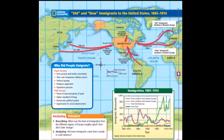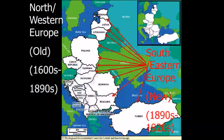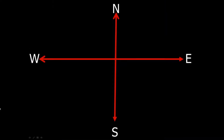Here's a quick map showing the time frame and different push and pull factors — pause and write them down for your notes. Old immigrants from North and Western Europe came from the 1600s all the way to the 1890s. The new immigrants came from Romania, Lithuania, Poland — these Eastern Bloc countries. Northwest on the map is old immigration; south and east on the continent of Europe is new immigration.